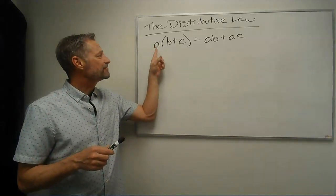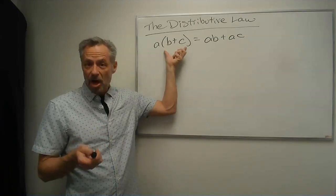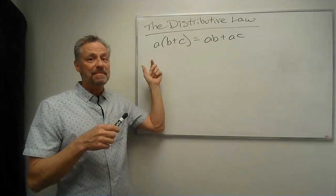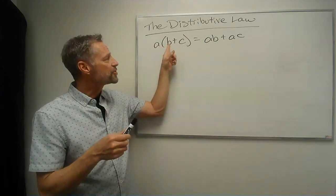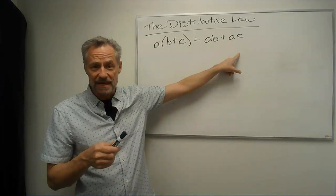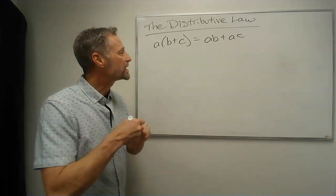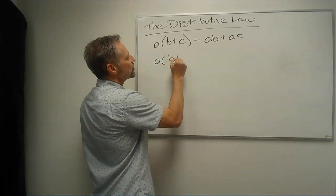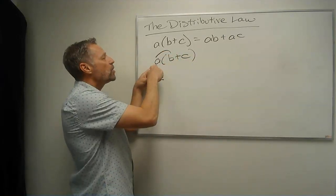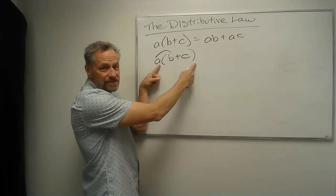So the distributive law says if I have A times the sum, remember the sum means add, B plus C, that's the same as distributing the A through to each of these pieces. So it's A times B plus A times C. So the idea what we can think of is we're taking, let's write it out this way. We distribute inside, instead of A times this sum...